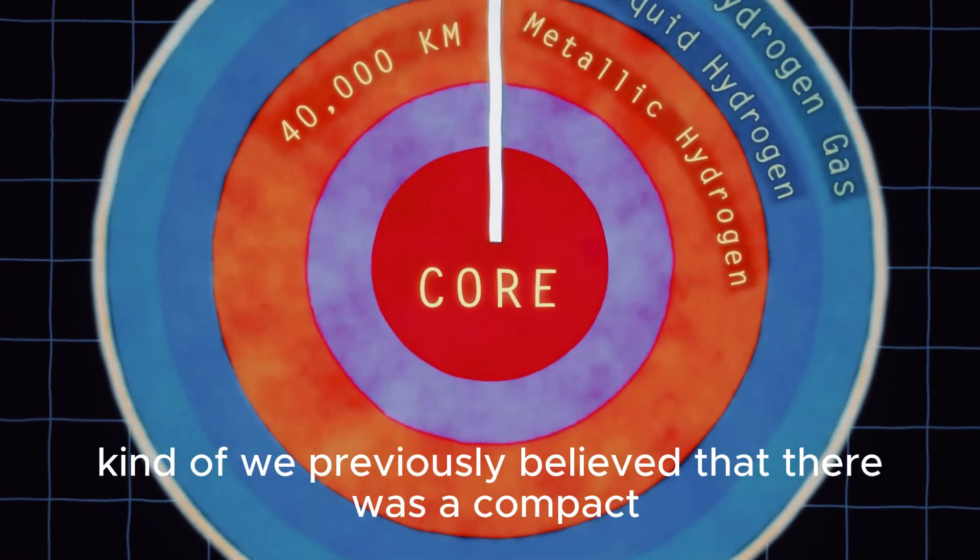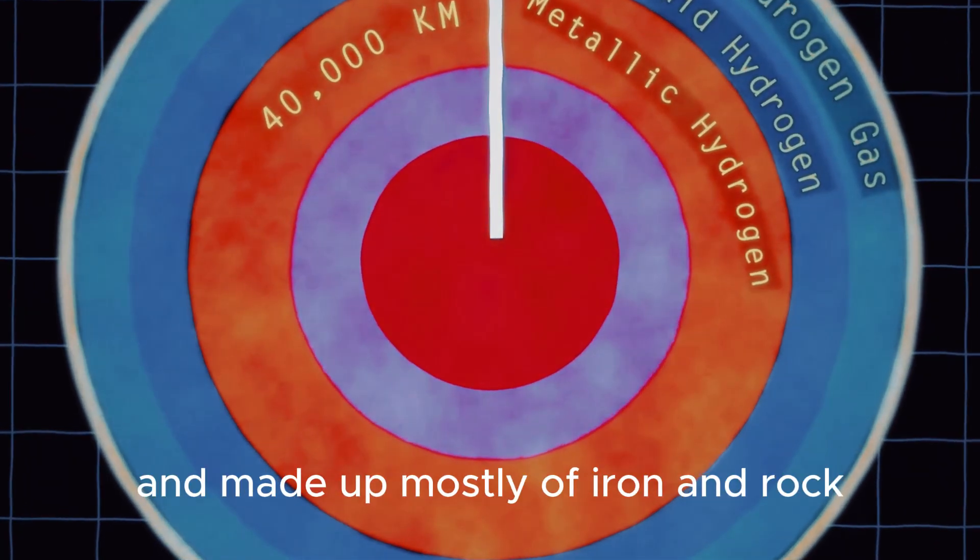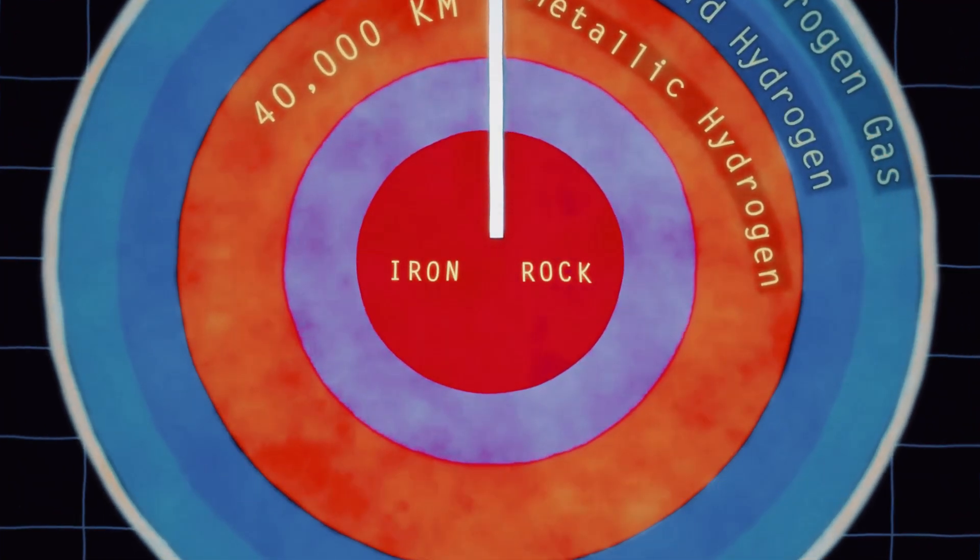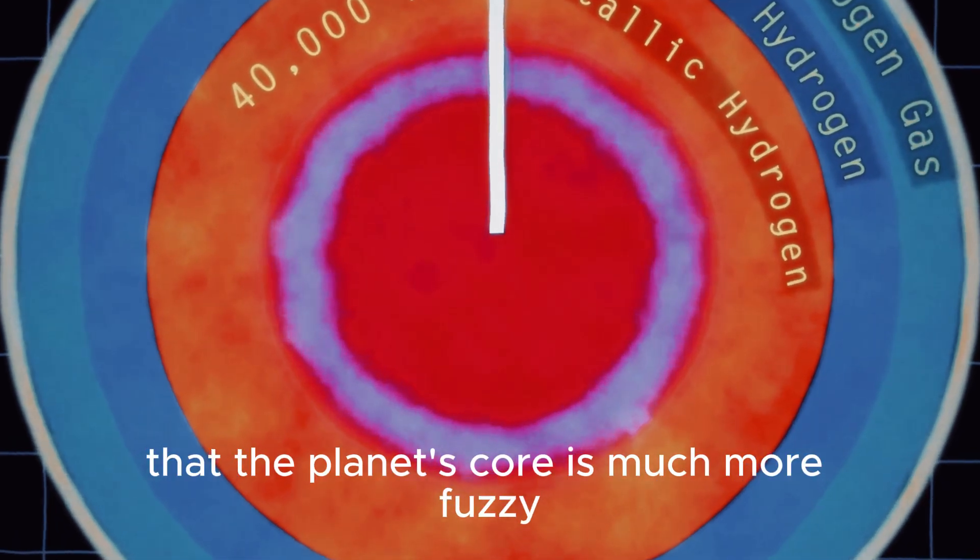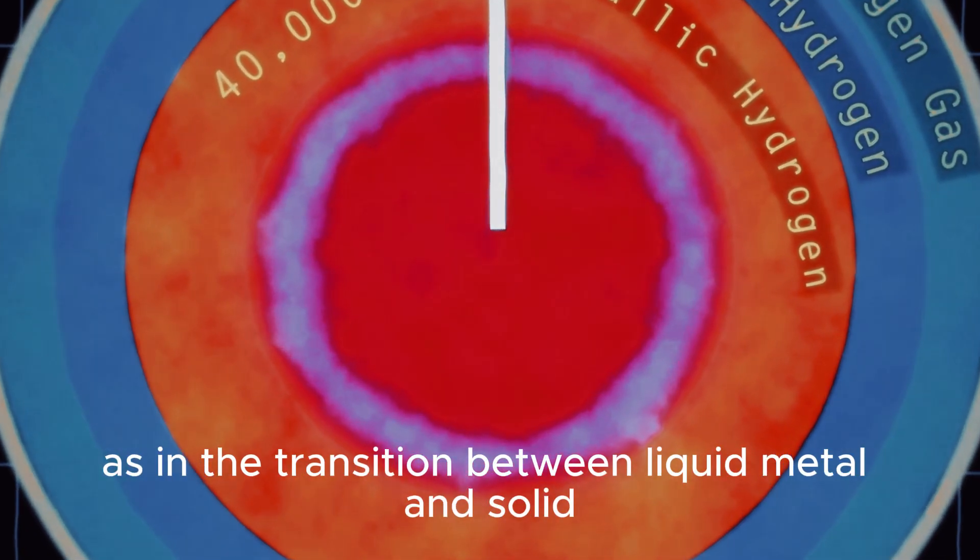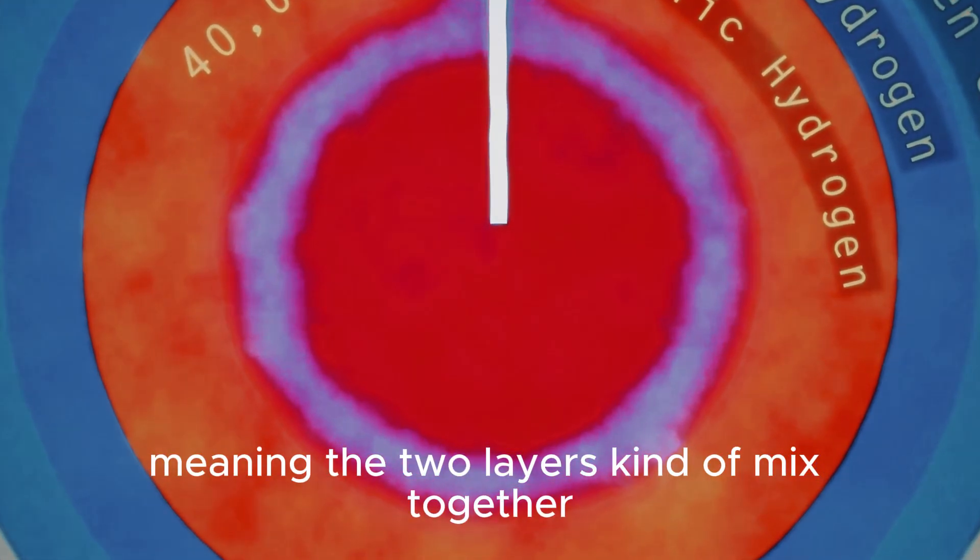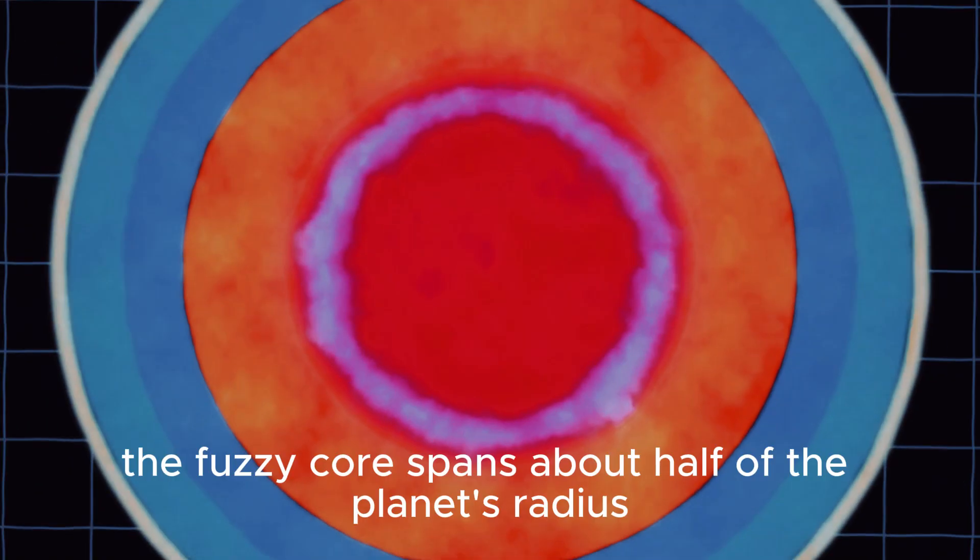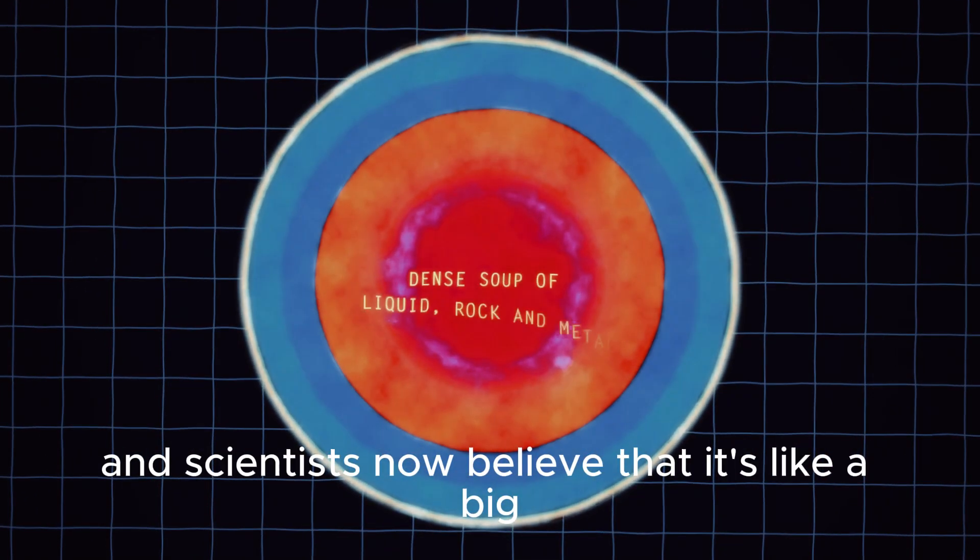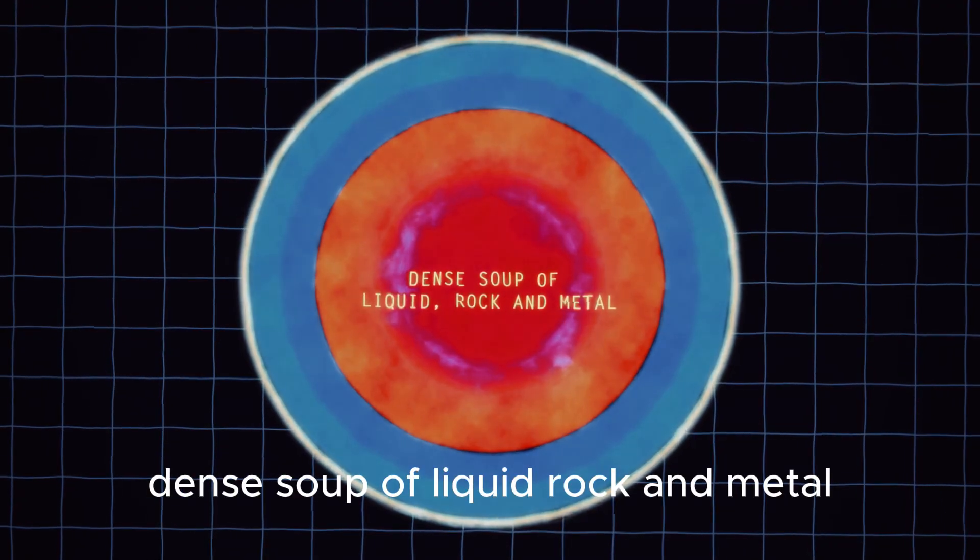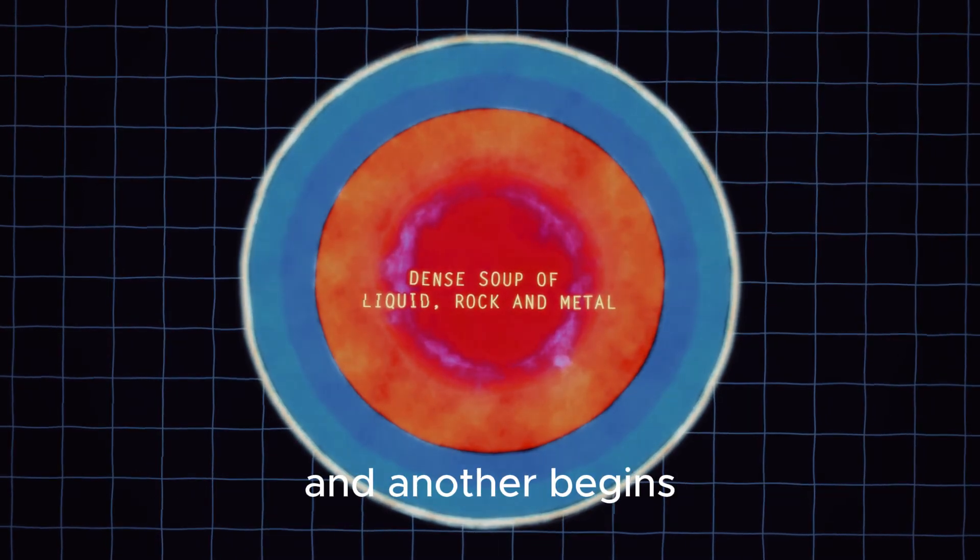Kind of. We previously believed that there was a compact, dense object in the middle of Jupiter about the size of the Earth, and made up mostly of iron and rock. That made sense, but new research is uncovering that the planet's core is much more fuzzy, as in the transition between liquid metal and solid core isn't a hard line, meaning the two layers kind of mix together. The fuzzy core spans about half of the planet's radius, and scientists now believe that it's like a big, dense soup of liquid, rock, and metal, all stirred up together with no boundary between where one state of matter ends and another begins.